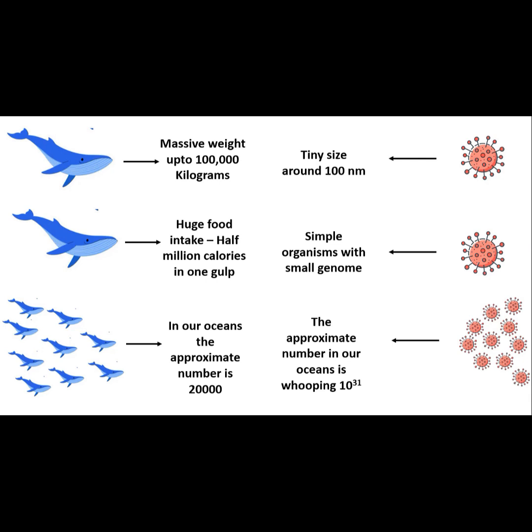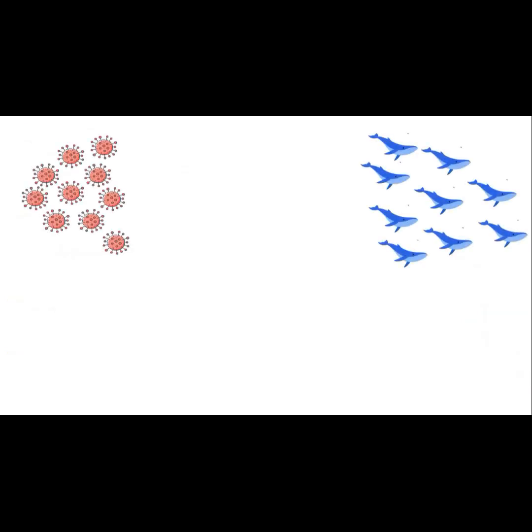it adds up to an astonishing 10 to the power 31. So, on one hand, we have massive size of blue whales and on the other, the sheer numbers of viruses. This is nature showing off a stunning example of evolution and a glimpse into two extremes of life.